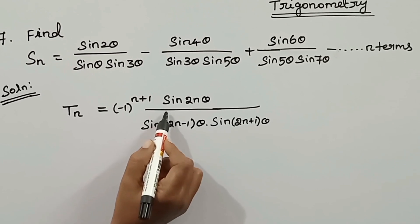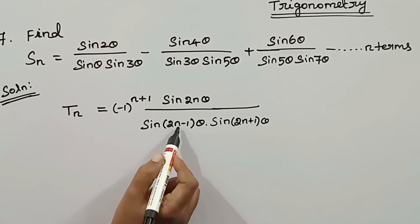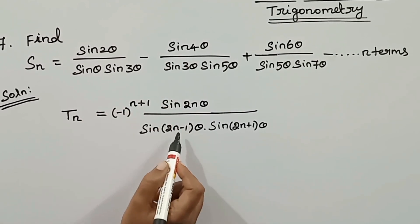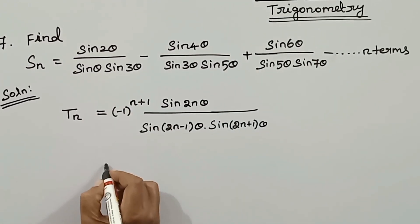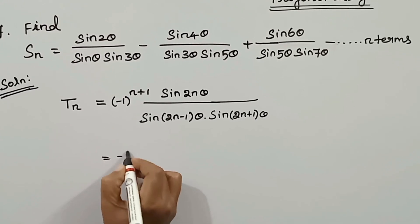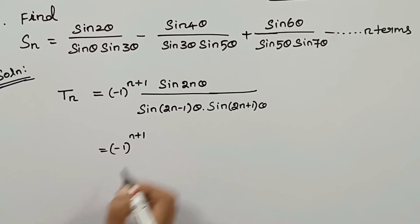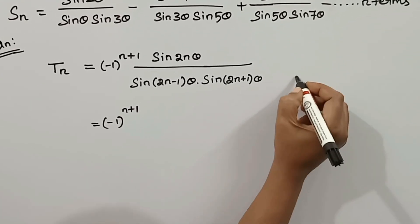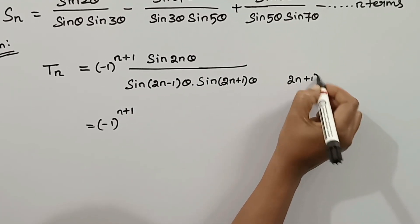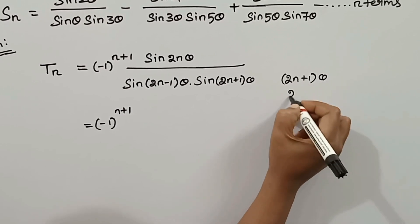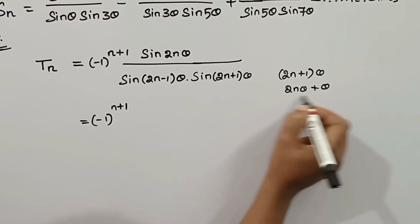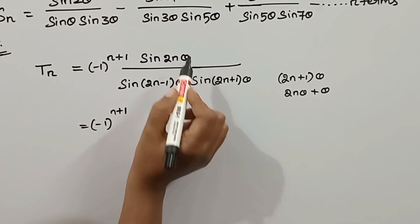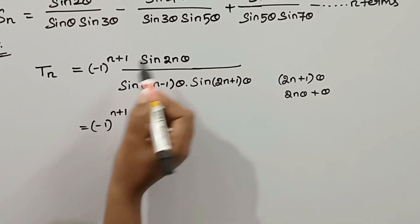In the general term, we substitute 1 and 2. Now if we substitute 2, we get minus sin. We have the general term. Next step: we fix minus 1 whole power n plus 1. The denominator is sin(2n-1) theta and sin(2n+1) theta. The numerator is sin 2n theta. What we did in previous videos: we divide by sin theta.